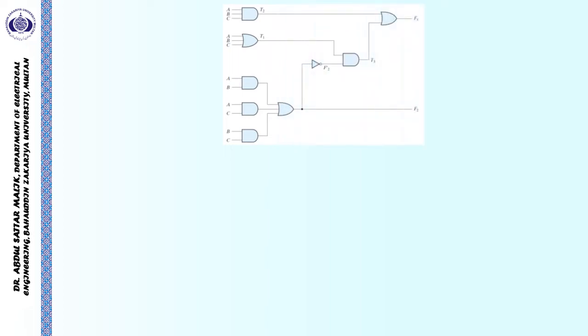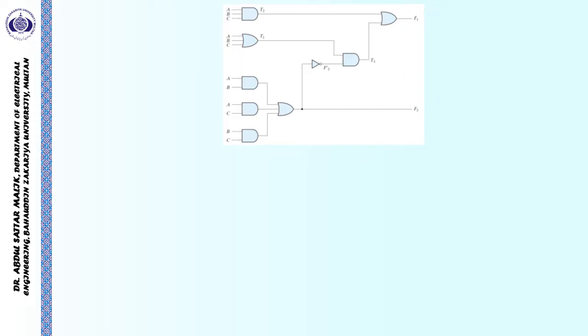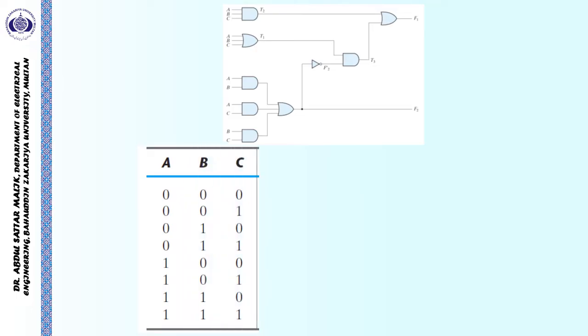Let's try to find the truth table of a given logic diagram with the help of an example. For the same circuit for which we obtained the Boolean expression, now we will try to write down its truth table. Here is that particular circuit — again, the same circuit with three inputs A, B and C and two outputs F1 and F2. Initially, we have written the eight possible combinations for the three input variables A, B and C, obviously from 0 0 0 up to 1 1 1.